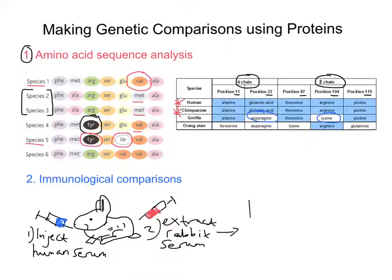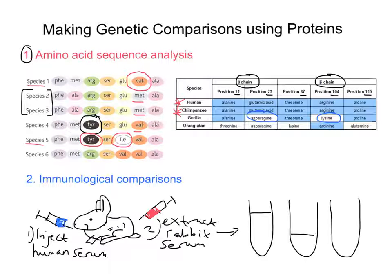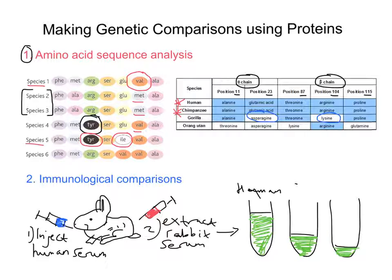So if we draw three test tubes — let's say the first contains serum from a human, the second contains serum from a chimp, and the third contains serum from a dog — we add the rabbit serum (containing anti-human albumin antibodies) to each. An increasing amount of precipitation that forms shows a closer evolutionary relationship.